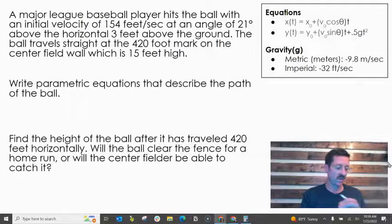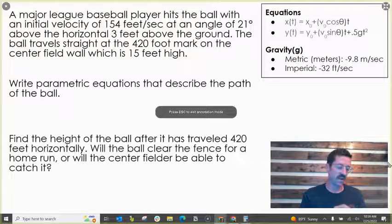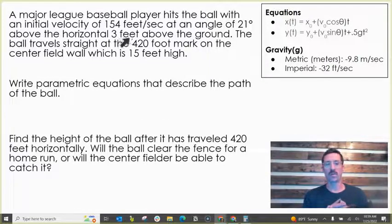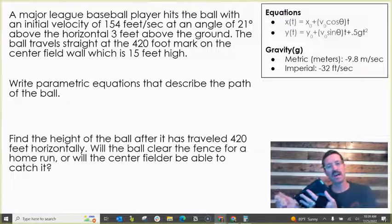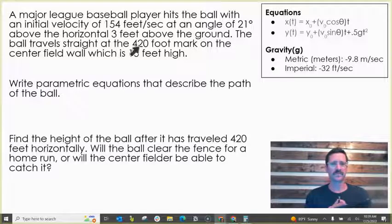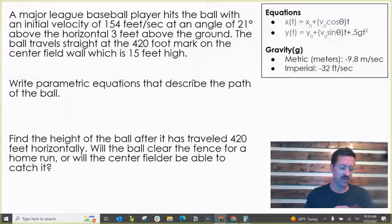Let's look at our next example. A major league baseball player hits a ball with an initial velocity of 154 feet at an angle of 21 degrees. Now, above the horizontal, three feet above the ground. Remember, when you're hitting a baseball, it's not like a golf ball. You're hitting off the ground. You're hitting it about three feet off the ground. And so we're wondering if it's going to make it over that center field wall.